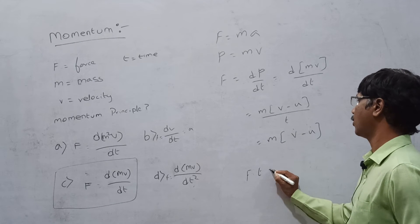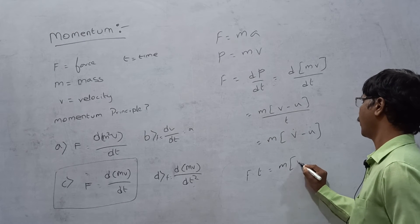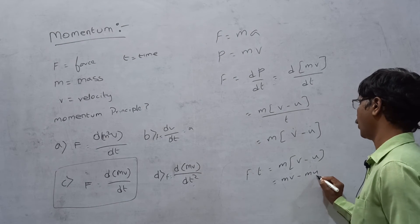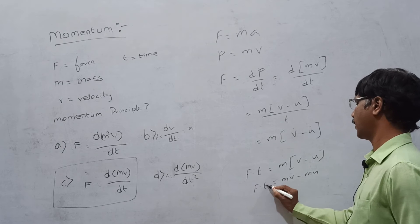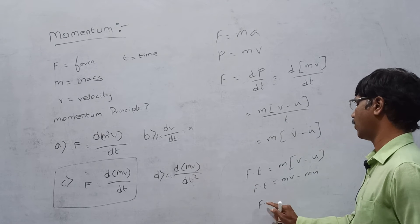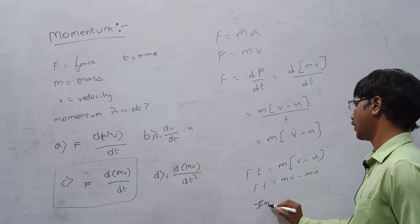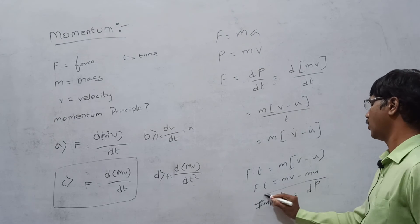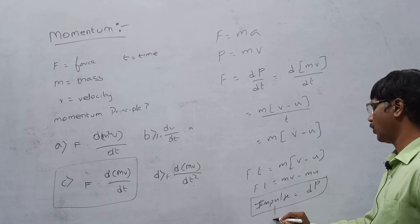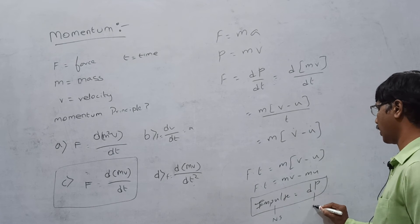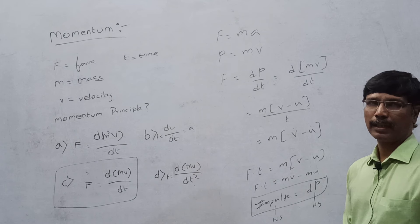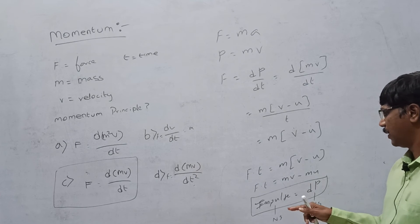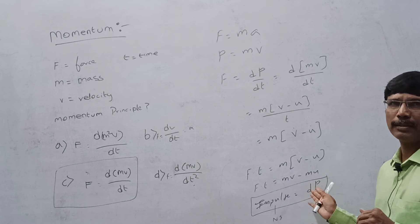F dot T equal to M into V minus U. MV minus MU equal to F dot T. F dot T is nothing but impulse. Impulse equal to change in momentum. Impulse equal to Newton second. Both are analogous to E. The two are equal to one. Impulse equal to change in momentum.